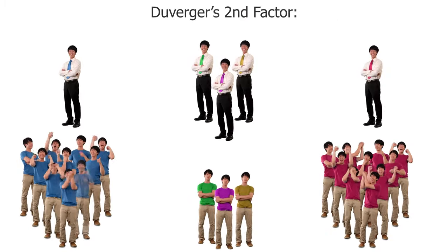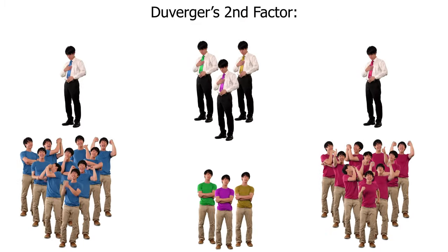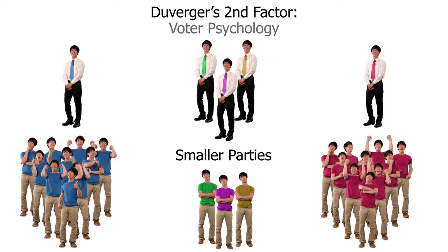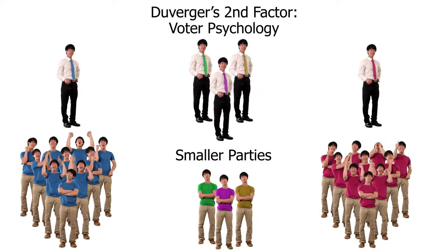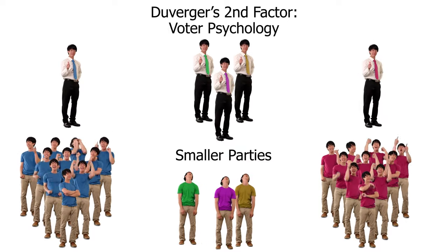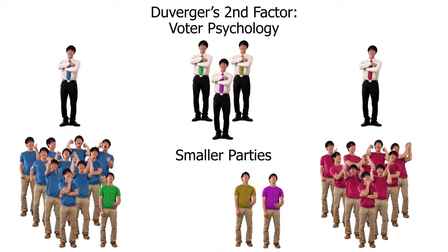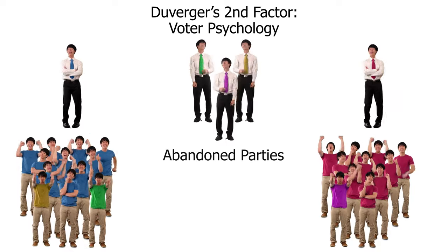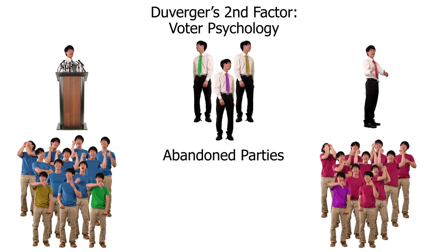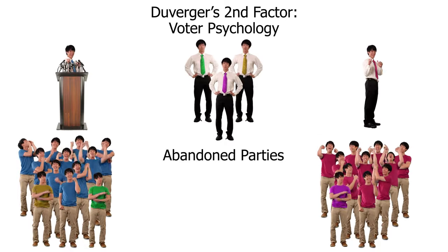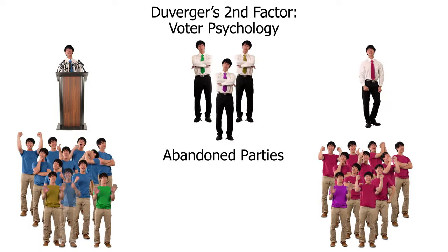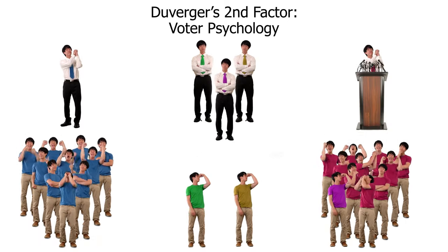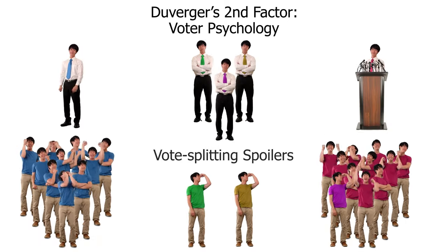Per Duverger's second factor, plurality voting is hard on small parties because of voter psychology. With only one choice, people don't vote for smaller parties even if the candidate is their favorite, because nobody wants to waste their vote or, even worse, throw the election to a candidate they hate — the infamous spoiler effect.